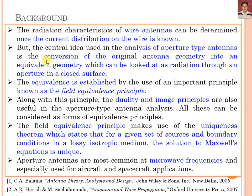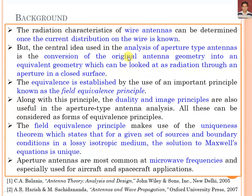So we have to analyse the aperture antenna differently. It involves the conversion of the original antenna geometry into an equivalent geometry, which can be looked at as radiation through an aperture in a closed surface. The equivalence is established by the use of an important principle known as the field equivalence principle. Using this principle, we can calculate the radiation characteristics of the aperture antenna. Along with this principle, the duality and image principle are also used in aperture-type analysis.